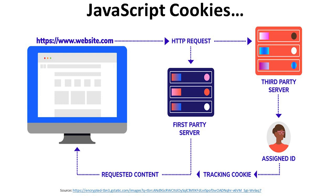Here we have this HTTPS request — www.website.com. If it gives an HTTP request, the first party is the server and then the requested component is displayed on screen. Here, through a diagram, we have elaborated how JavaScript cookies are registered and provided as a file.